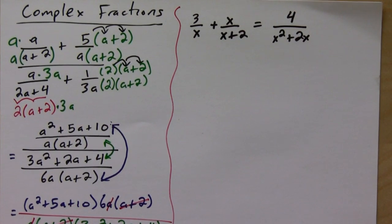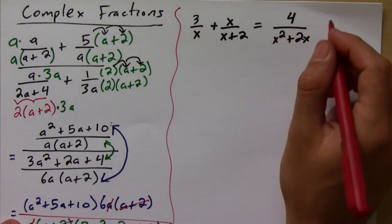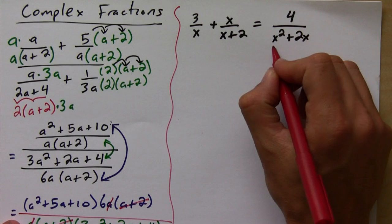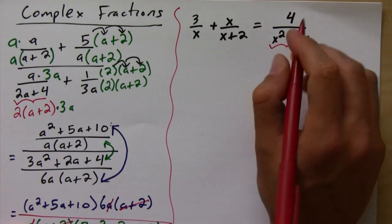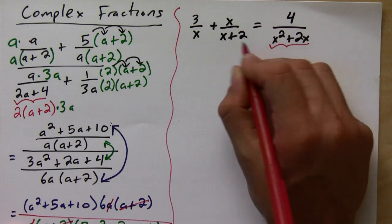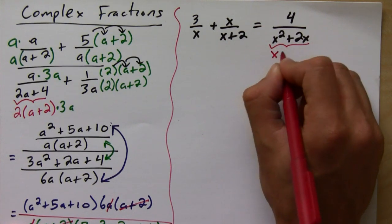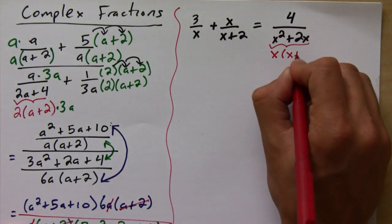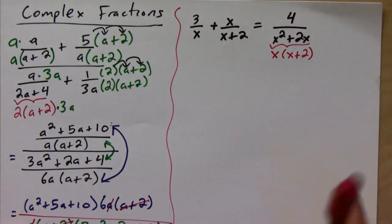Okay, so solving rational equations is very similar to adding and subtracting rational equations. First thing you do is you find the LCD of both sides. So to do that we need to factor everything, all the denominators. So this guy factors into x times (x plus 2).